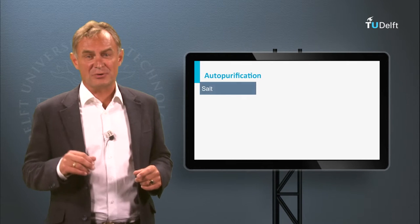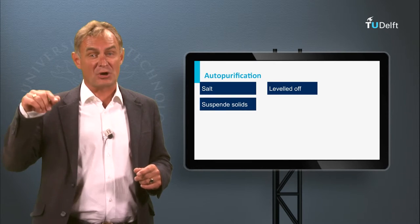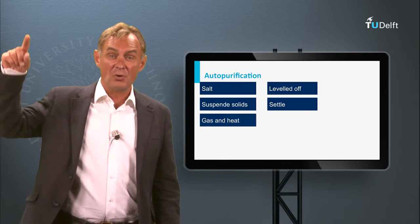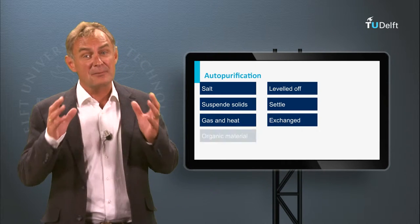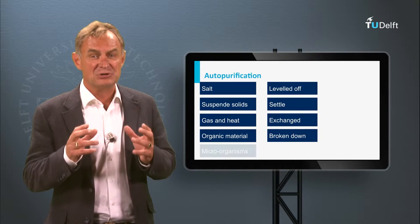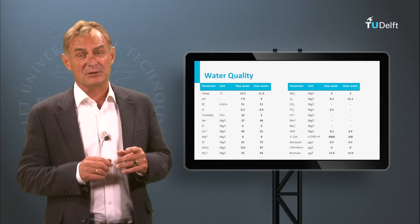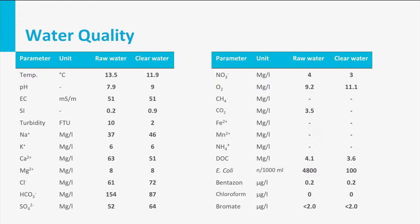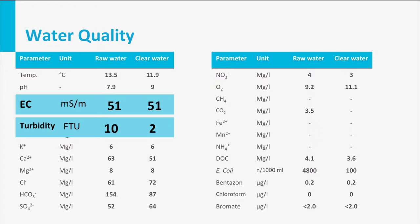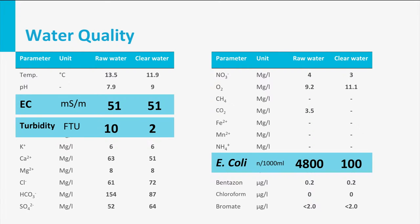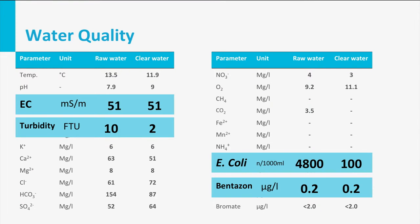High salt concentrations will be levelled off due to mixing. Suspended solids will settle. Gas and heat will be exchanged with the atmosphere. Organic matter will be broken down. And anthropogenic pathogenic microorganisms will decay. From the water quality table, it can be concluded that, for example, the average electrical conductivity, as an indication of salt content, remains the same. Turbidity values decrease. E. coli numbers, as an indicator for pathogens, decrease. And the bentazone concentration, as an indicator of herbicides, remains the same, since degradation does not occur.